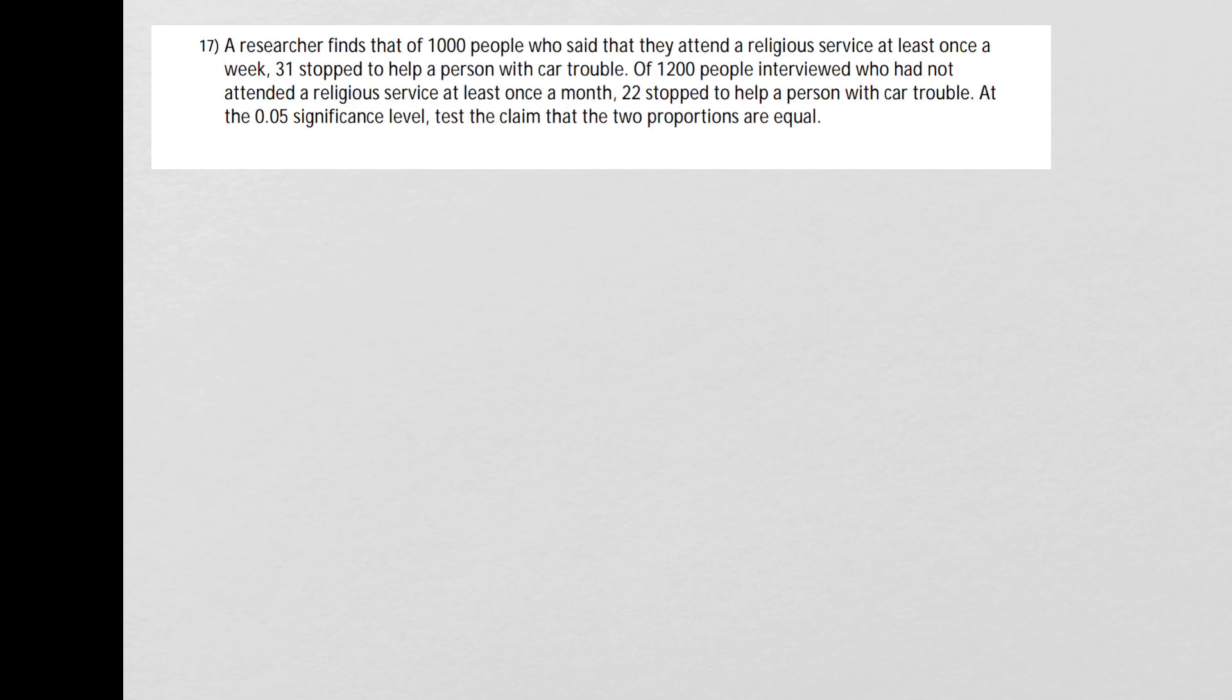We're going to start by writing our null and alternative hypotheses. So I write H0 and then H1. For the null hypothesis H0, we're testing the claim that the two proportions are equal. So I'm going to say that proportion 1 is equal to proportion 2.